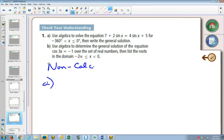So how do we go about solving starting with A? In A, we've got 7 plus 2 sine x equals 4 sine x plus 5 between negative 360 and 0. So what we're going to do as a general thing, we're going to solve between 0 and 2 pi first, then look at the domain that they've given us and adjust things in this case between negative 360 and 0.